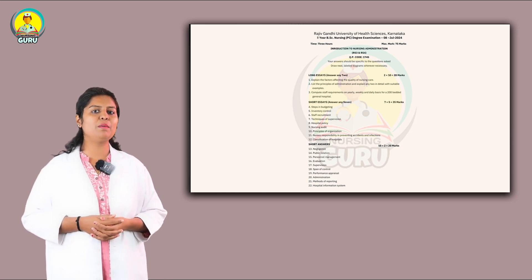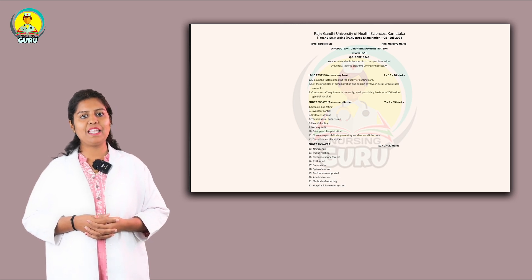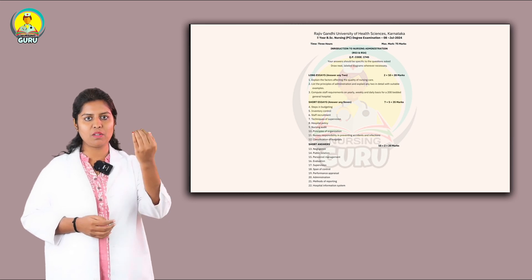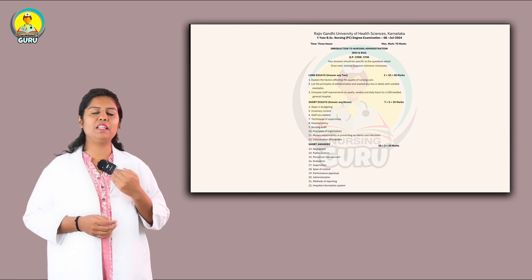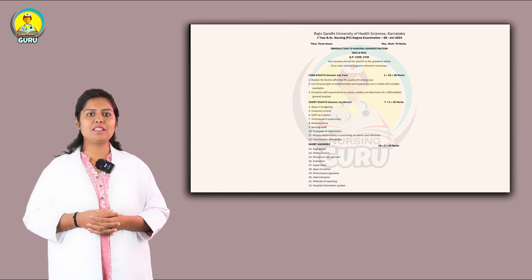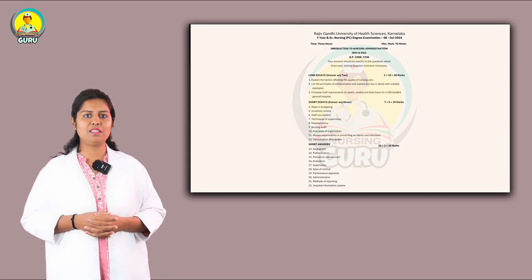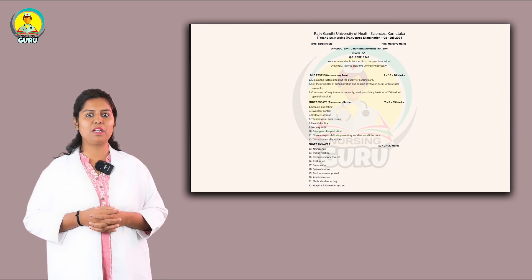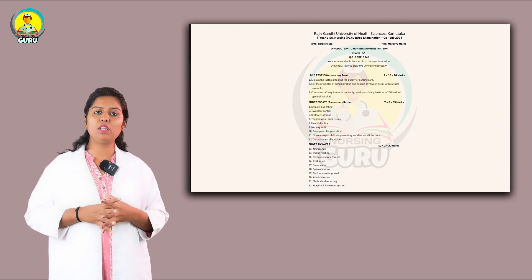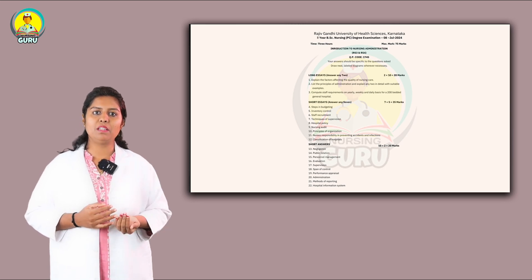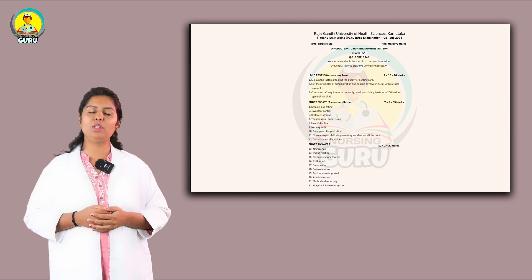The second long essay question is: list the principles of administration and explain any 2 in detail with suitable examples. Write down all the principles, then explain only 2 with examples. The third is: compute staff requirement on yearly, weekly, and daily basis for a 200-bedded general hospital. You need to explain everything regarding the 200-bedded general hospital — how you will recruit staff and all the processes involved. Remember, you only need to answer 2 out of 3 long essay questions.